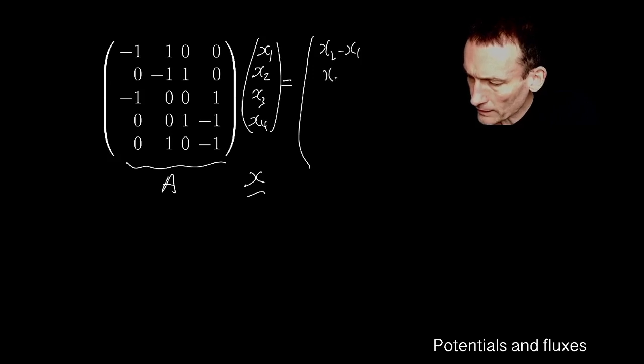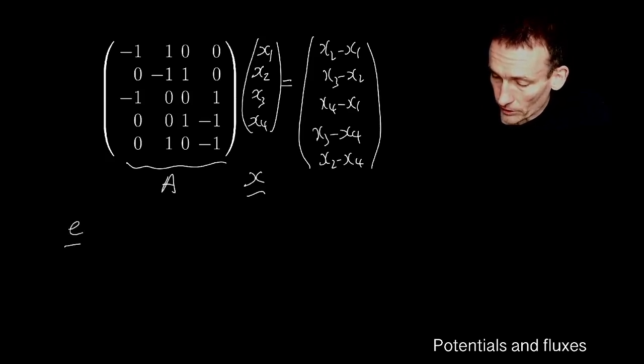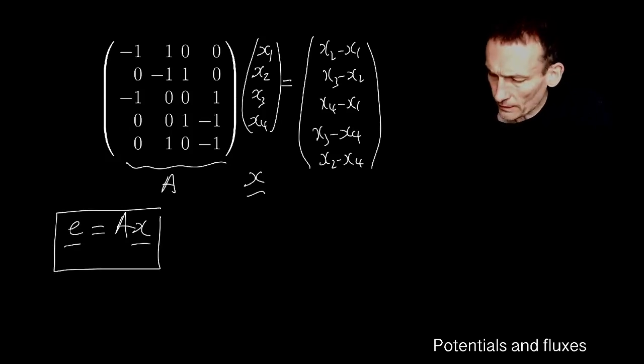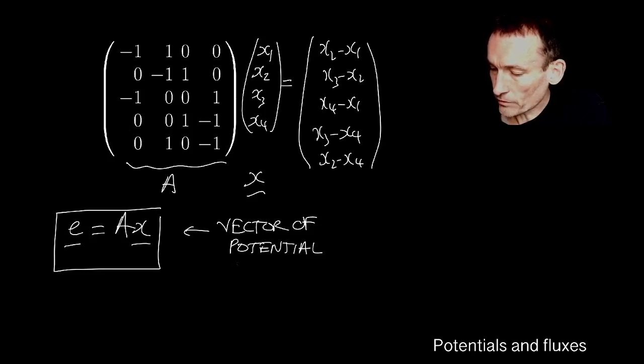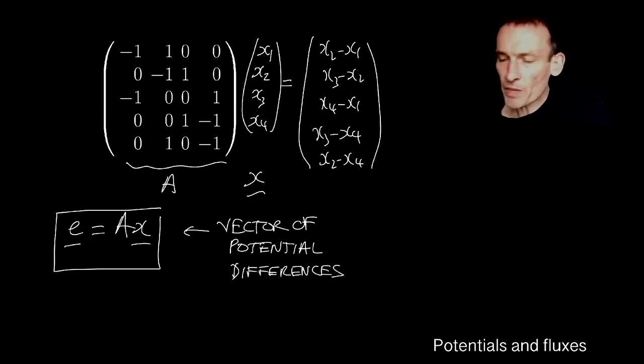And I've worked this out before, so I'll just do it quickly again. Isn't it x2 minus x1, x3 minus x2, x4 minus x1, x3 minus x4, and then x2 minus x4. And you remember, we decided in a past lecture to christen this E. It was A times x, and we called this the vector of potential differences. It's the vector of potential differences. The differences across any given edge, A, B, C, D, E, there's five of them, of the potentials at the ends of the edges, the nodes at either end of the edges.